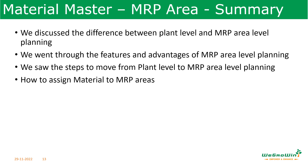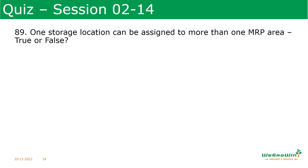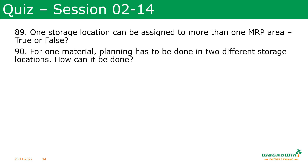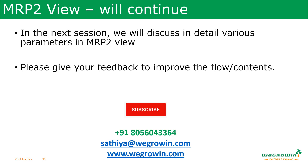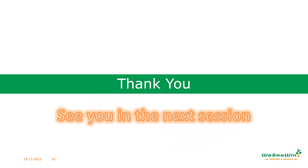We discussed the difference between plant-level MRP and MRP area-level planning, went through the different features and advantages of MRP area planning, saw the steps to move from plant level to MRP area-level planning, and how to assign material to MRP areas. It is time for the quiz for this session: One storage location can be assigned to more than one MRP area — true or false? For one material, planning has to be done in two different storage locations in the same plant — how can it be done? And what are the three different kinds of MRP areas and how are they defined? The answers will be discussed in the next session, where we will also discuss in detail various parameters in MRP2 view. Please give your feedback, and suggest your friends and colleagues to subscribe to our channel.